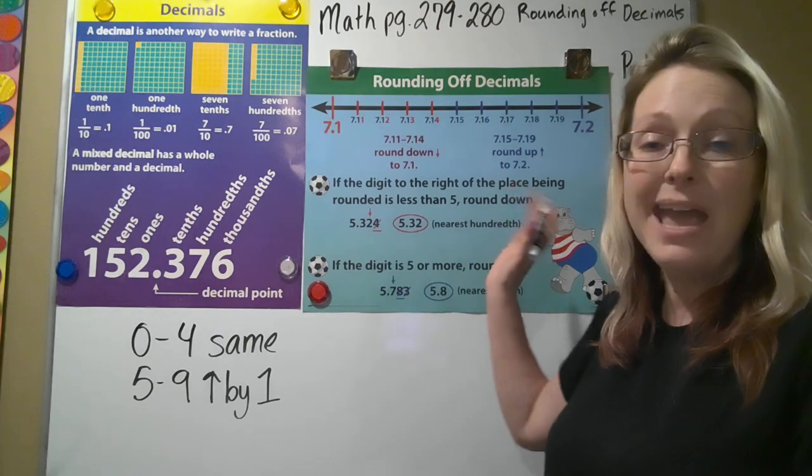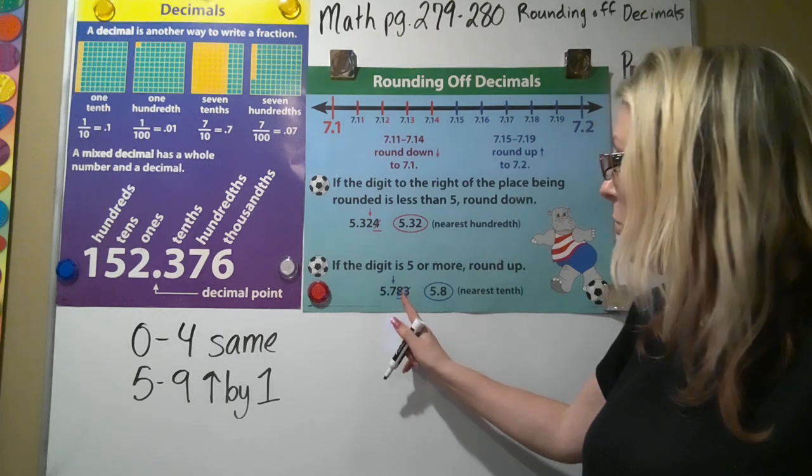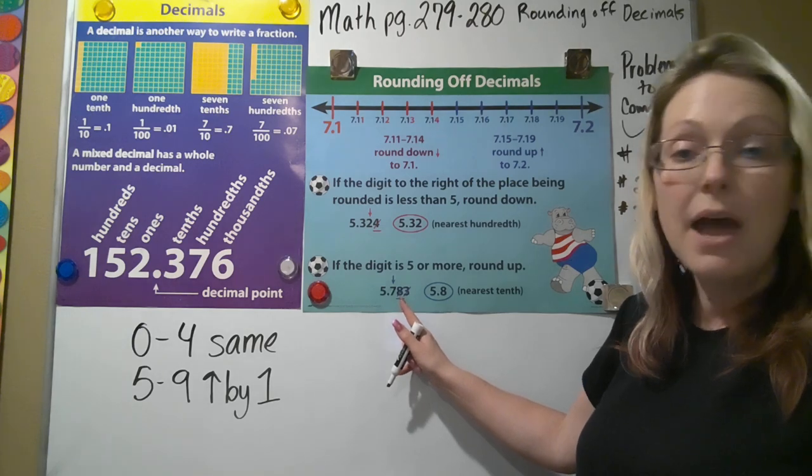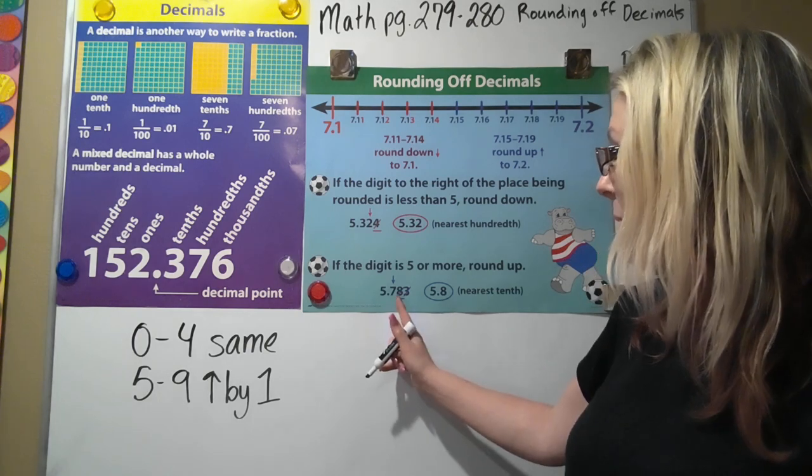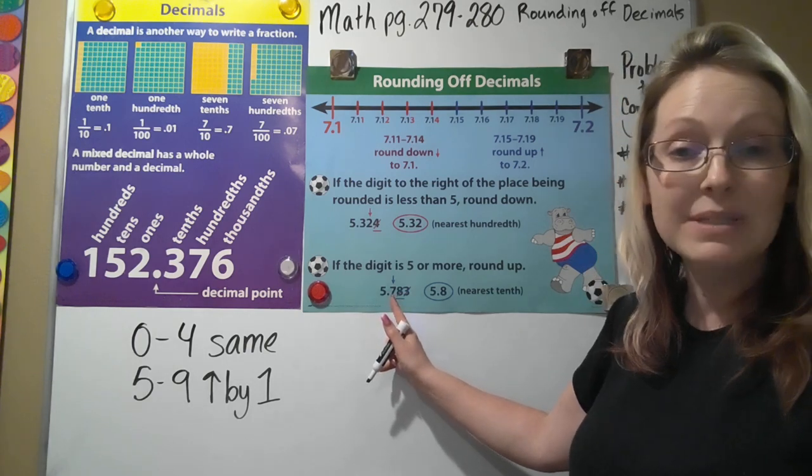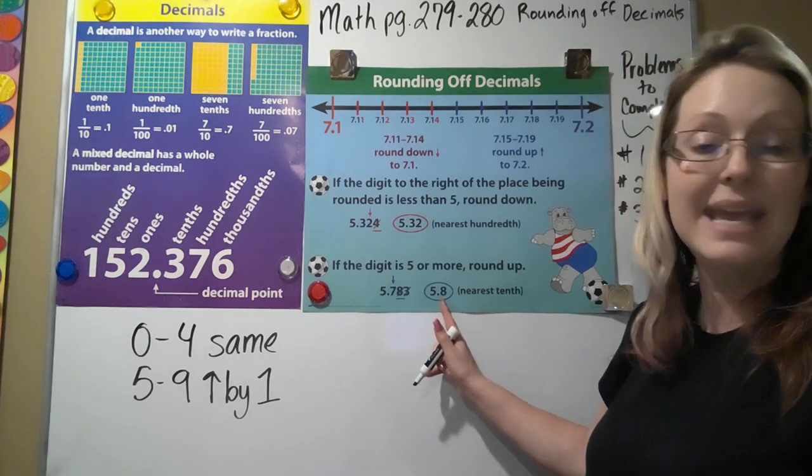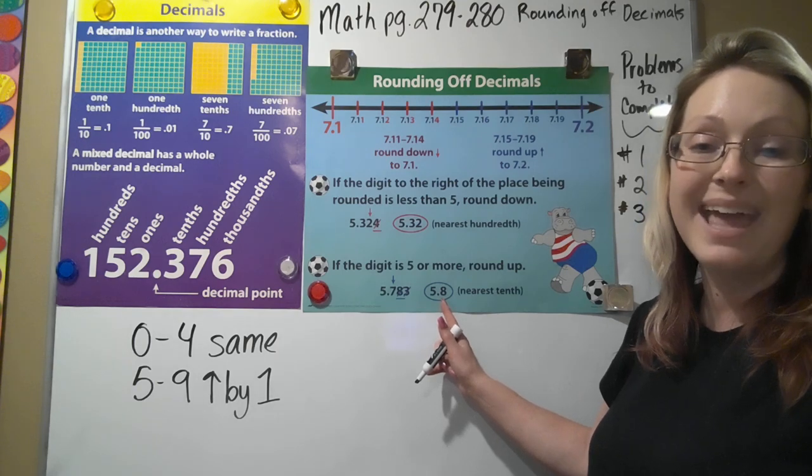We need to worry about this eight. Now eight falls between five to nine, goes up by one. That means we would end up rounding the seven up to an eight and we would get 5.8.